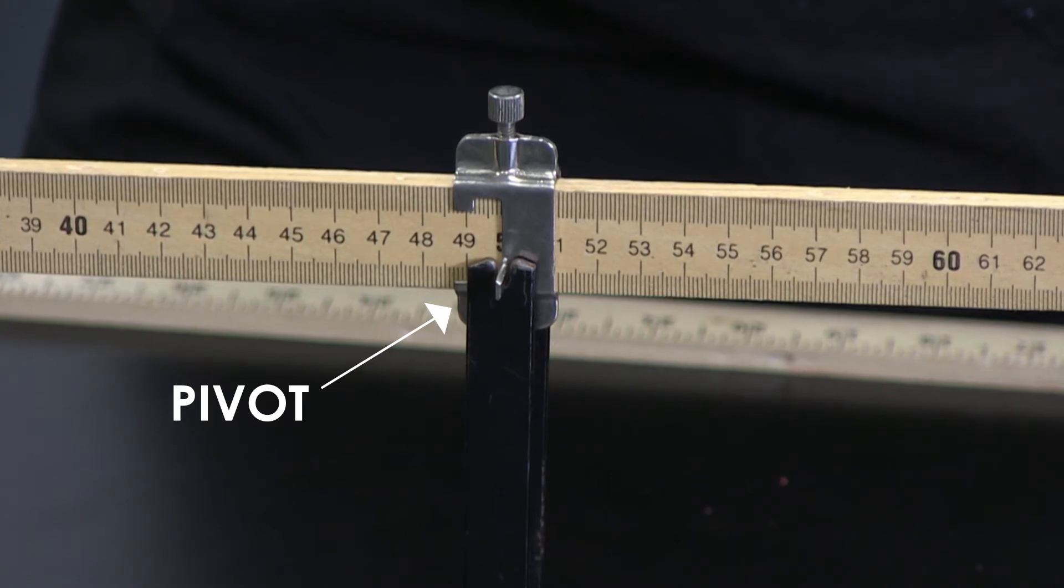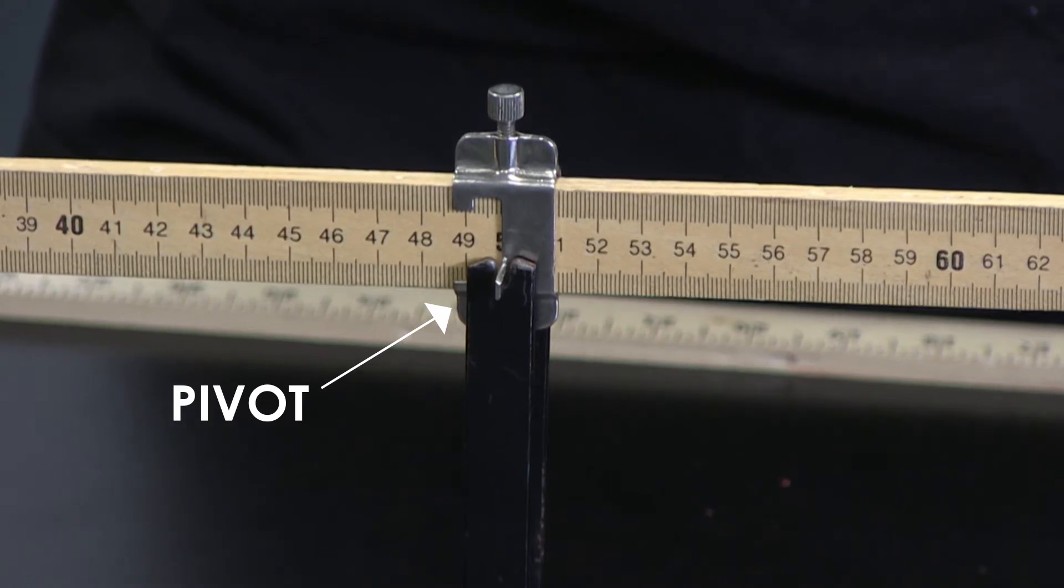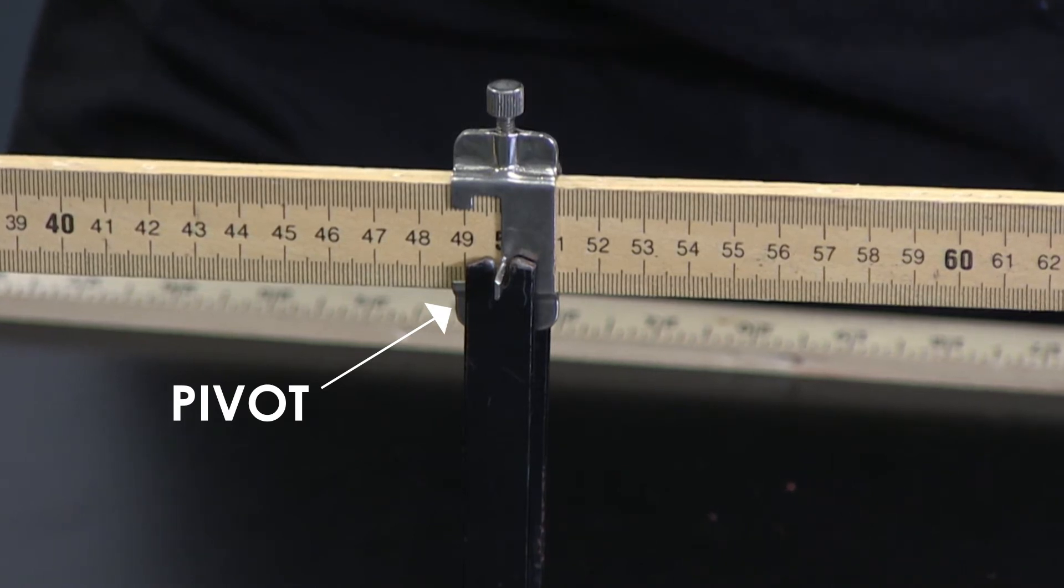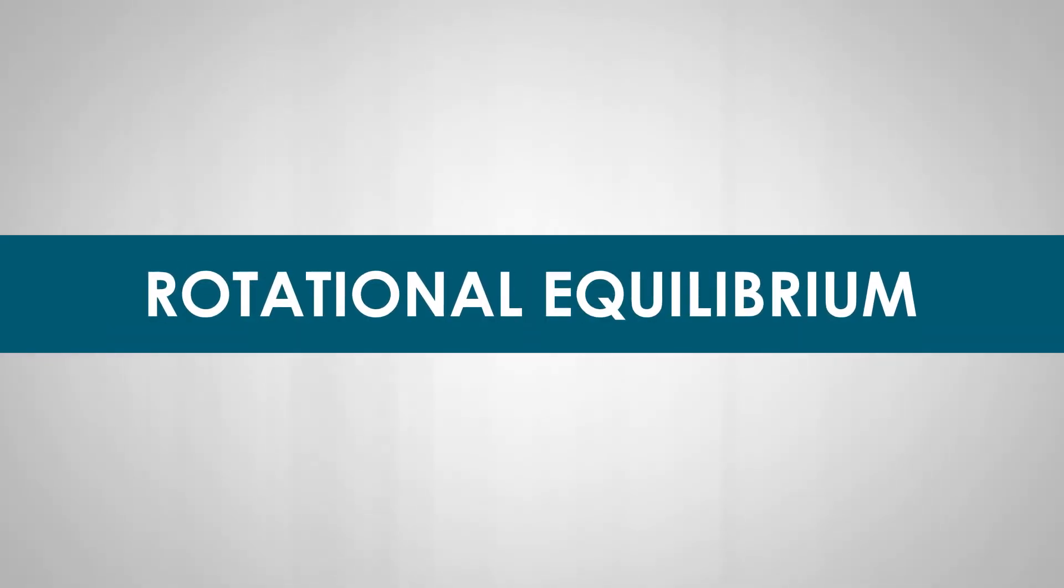However, if the stick is supported right below its center of gravity, then the torque produced by its weight around the pivot is zero and the stick does not rotate.